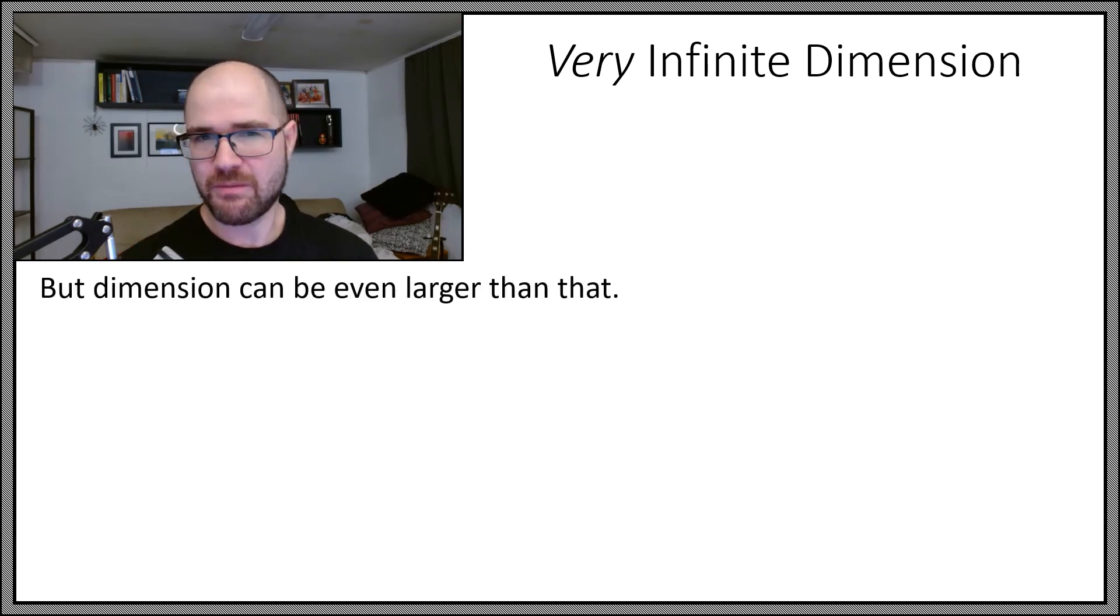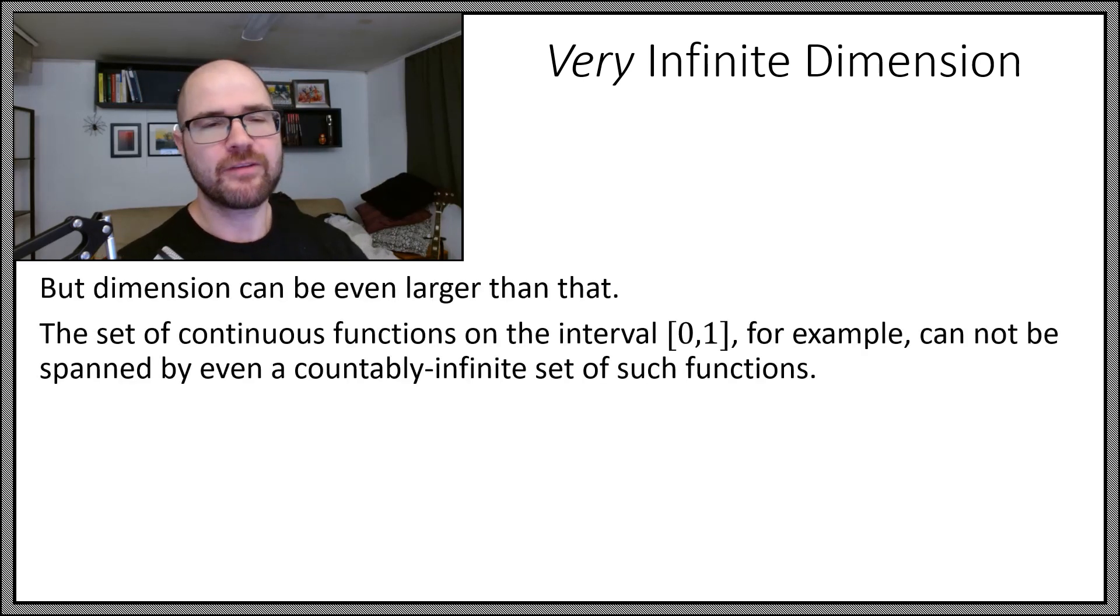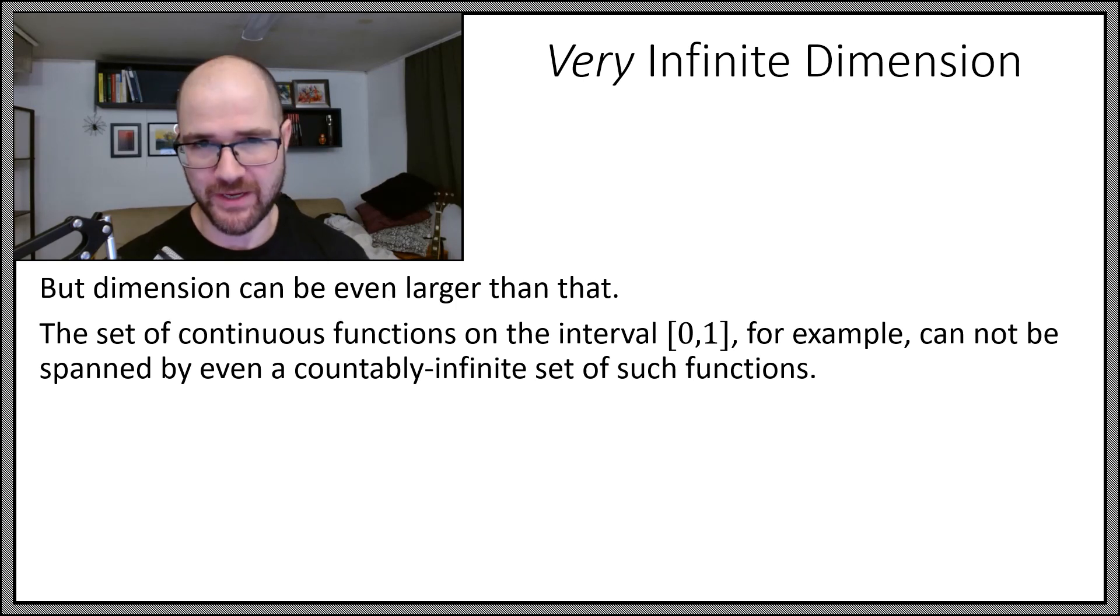But dimension can be even bigger than infinite. The set of continuous functions of the compact interval from zero to one, for example, cannot be spanned even by a countably infinite collection of functions. There is a dense countable subset in this space, but that doesn't make it a basis. So any vector space has a basis, as long as we're taking the axiom of choice, so put an asterisk there if that's something you really care about. Any basis for this space cannot even be countably infinite, it must be uncountably infinite.